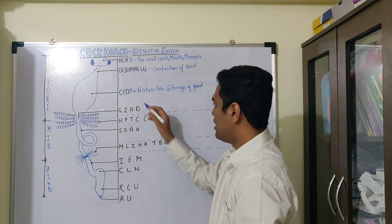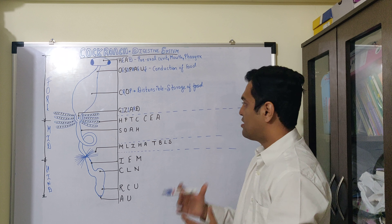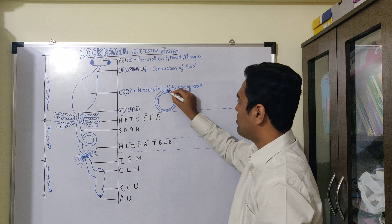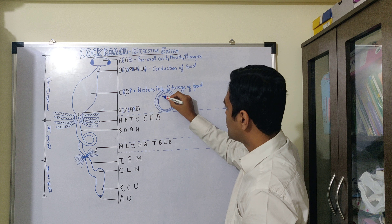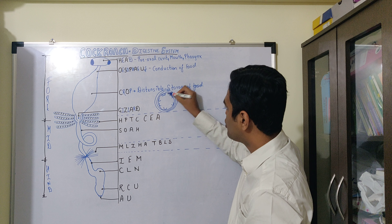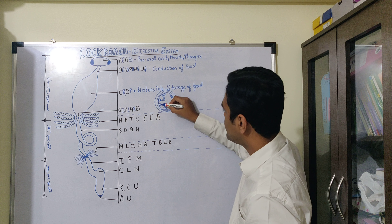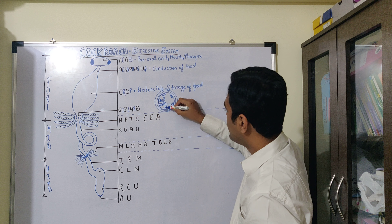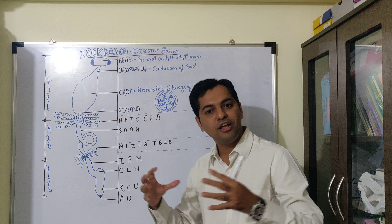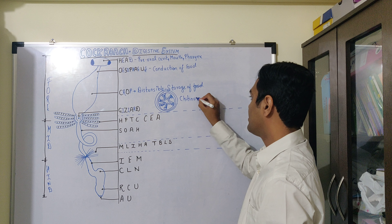The final component of the foregut is known as the gizzard. When we observe the gizzard in transverse section, it mainly consists of circular muscles. In those circular muscles there are six grooves, and these grooves contain backwardly arranged bristles. There is also presence of chitinous structures which are known as teeth. These six chitinous teeth will help in grinding the food, and the gizzard mainly helps in crushing and straining of the food.